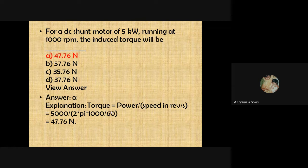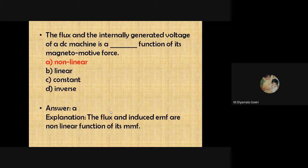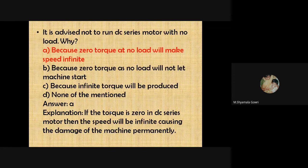The flux and the internally generated voltage of a DC machine are a non-linear function of its magnetomotive force. It is advised not to run a DC series motor at no load, because at no load the torque will be zero, the speed becomes very high — effectively infinite — and the motor will get permanently damaged.